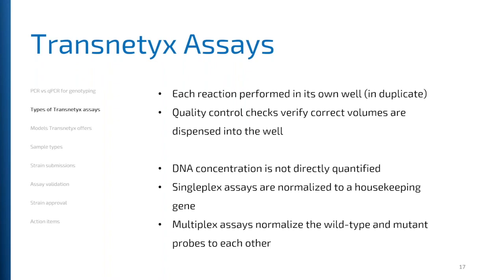As a summary: each reaction we perform at Transnetics is performed in its own well in duplicate. We run quality control checks to verify correct volumes have been dispensed for both DNA and the probes themselves. While we don't directly quantify DNA concentration, we run a housekeeping gene to normalize for the amount of DNA in each well. Singleplex assays are normalized to that housekeeping gene, whereas multiplex assays normalize the wild type and mutant probes to each other — allowing us to determine which alleles are present.